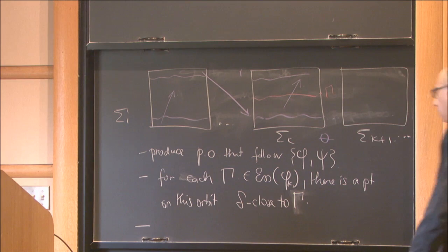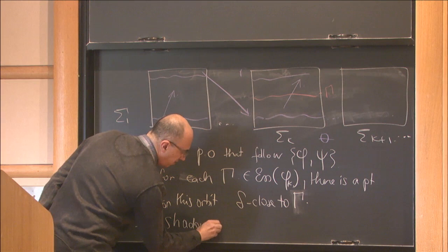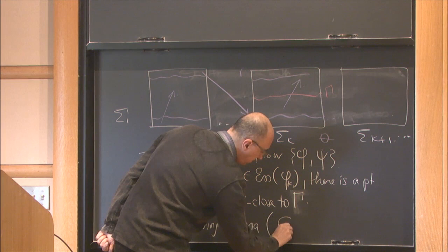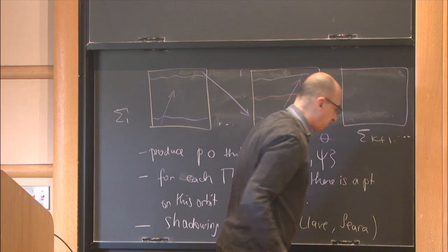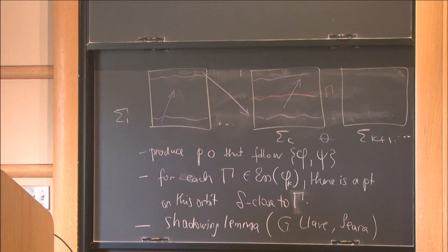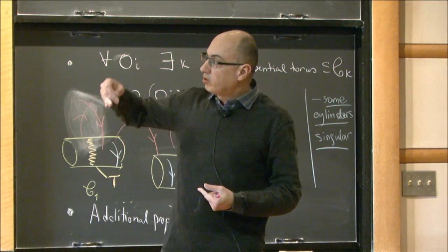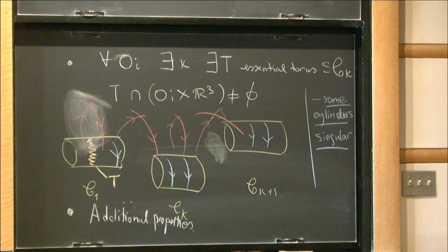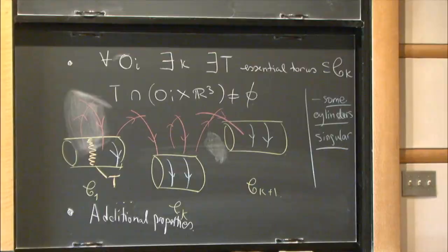Once you achieve this objective and have constructed a pseudo-orbit, you produce a true orbit via the shadowing lemma type of argument. This argument has to be tweaked a little bit because the scattering maps are for the flow, and you want to translate this into maps corresponding to the discretization.